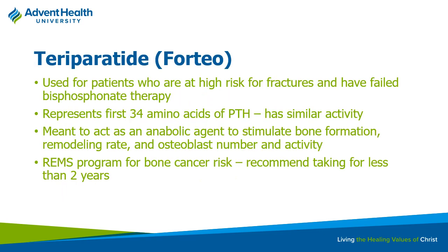Teriparatide (Forteo) is used when other therapies fail and fracture risk is very high. It shares the first 34 amino acids with PTH and works as an anabolic agent—it builds bone up by increasing osteoblast number. However, there's a bone cancer risk associated with it, which is why it's not used frequently and has a REMS program limiting use to less than two years, similar to Accutane.